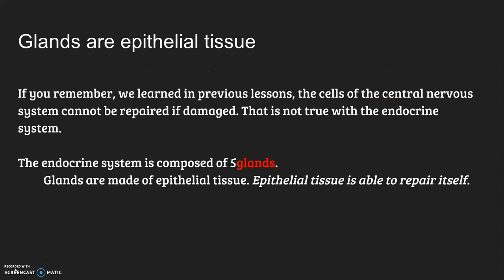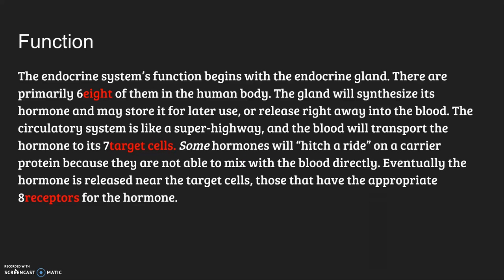If you remember, we learned that the cells of the central nervous system can't be repaired if they're damaged, but that's not true of the endocrine system. The endocrine system is instead composed of glands and organs. Glands are made of epithelial tissue, and epithelial tissue does have a mechanism to repair itself. The endocrine system's function begins with the actual endocrine gland, and there are primarily eight of those within the body. The gland will synthesize whatever hormone we need, and it might store it for later use, or it will immediately release that hormone into the blood.